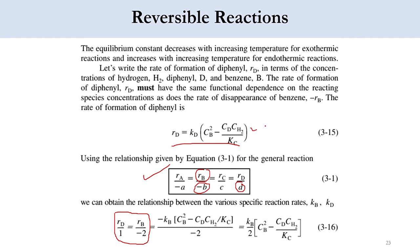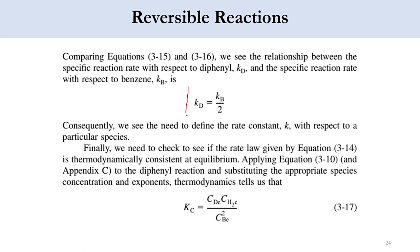R_D has two forms: one with specific reaction rate constant K_D in brackets, and one with K_B/2. Dividing both expressions, R_D cancels and the inner bracketed terms cancel, giving: K_D = K_B/2. This means the specific reaction rate constant for diphenyl equals the specific reaction rate constant for benzene divided by 2 — where 2 is the stoichiometric coefficient of benzene in the kinetic equation.